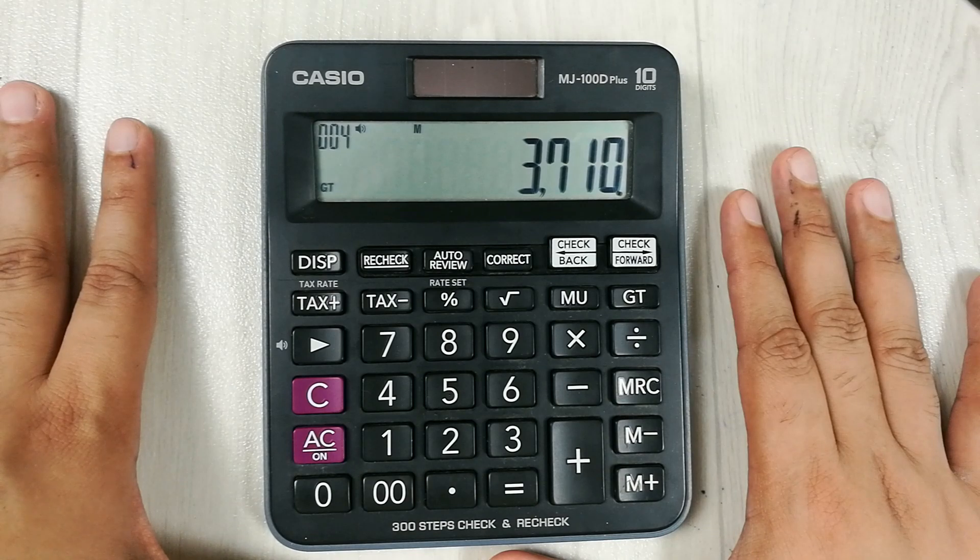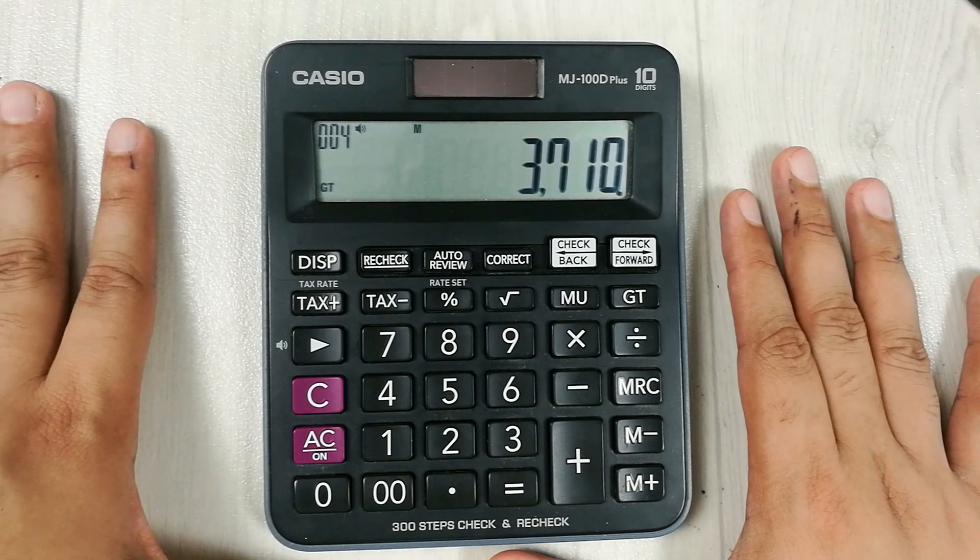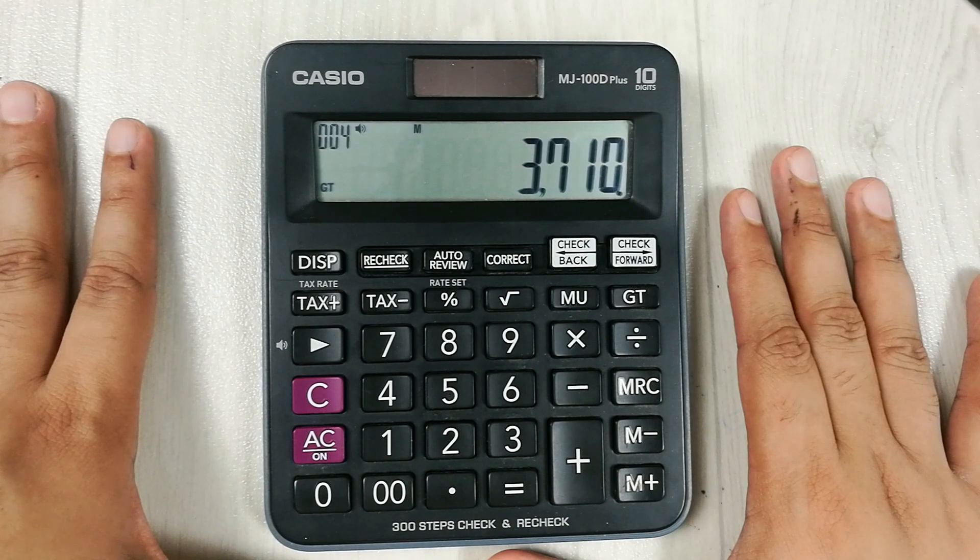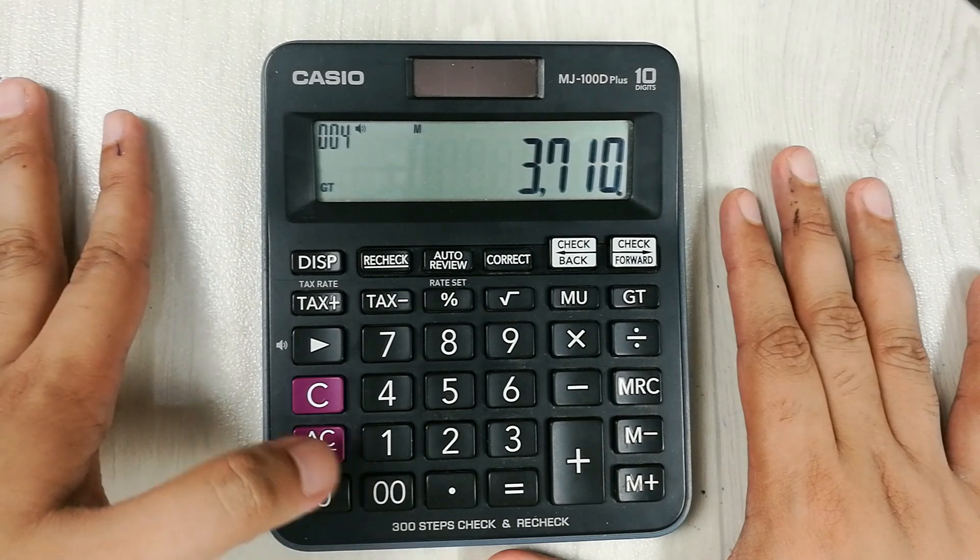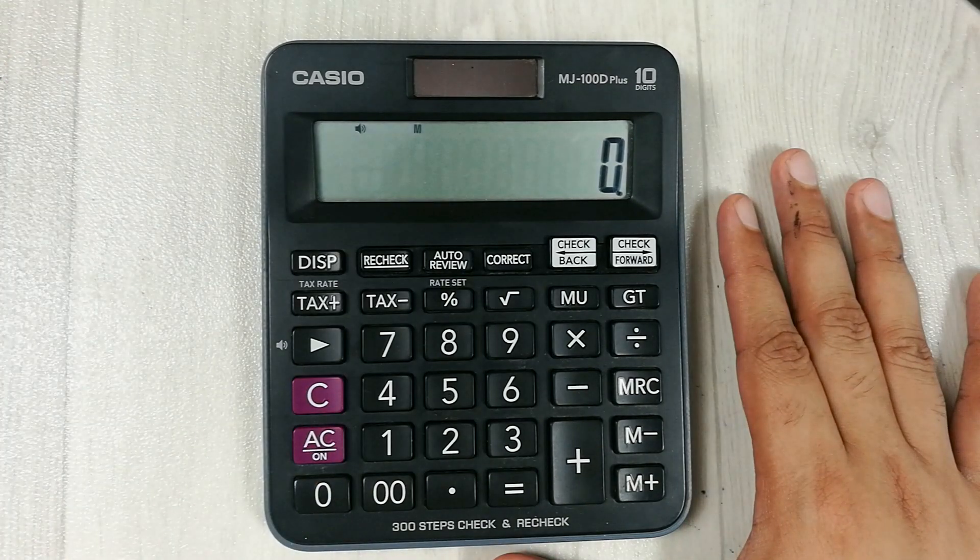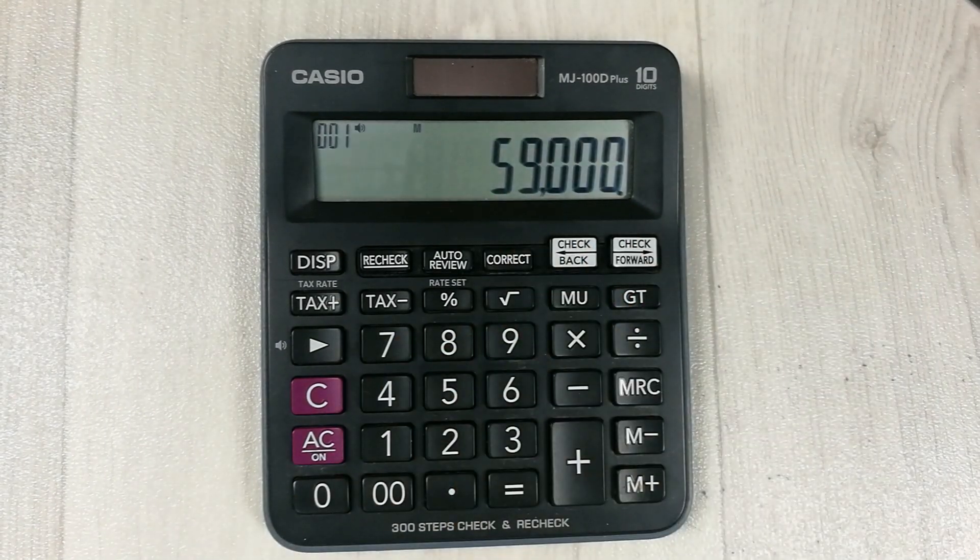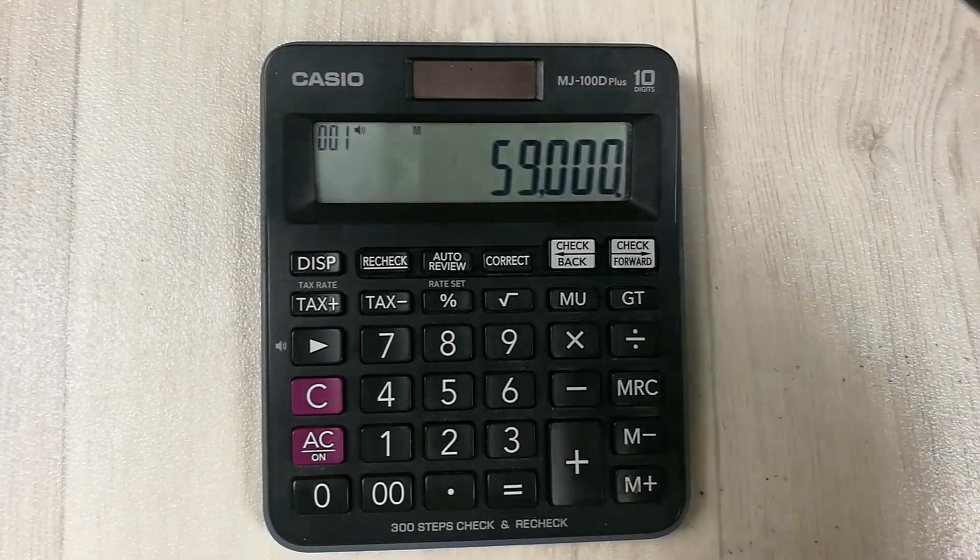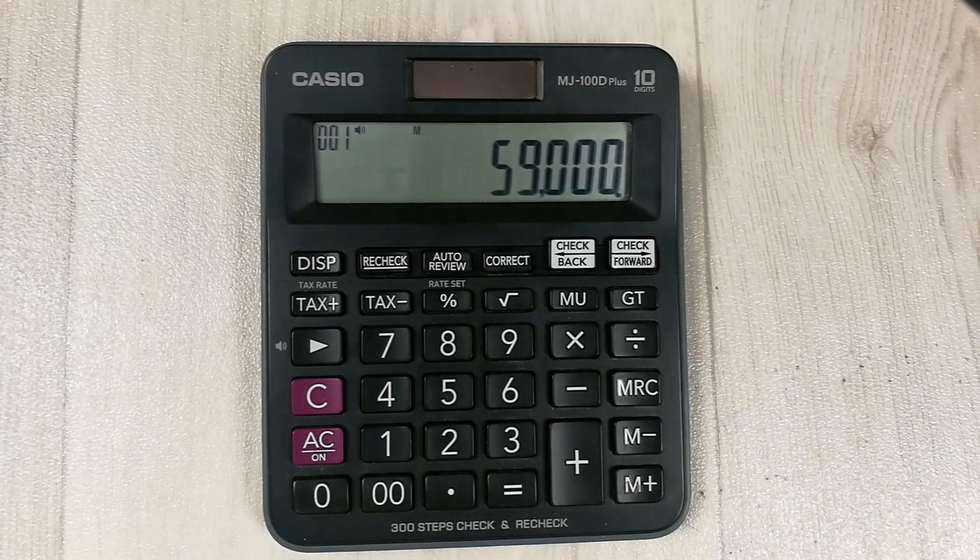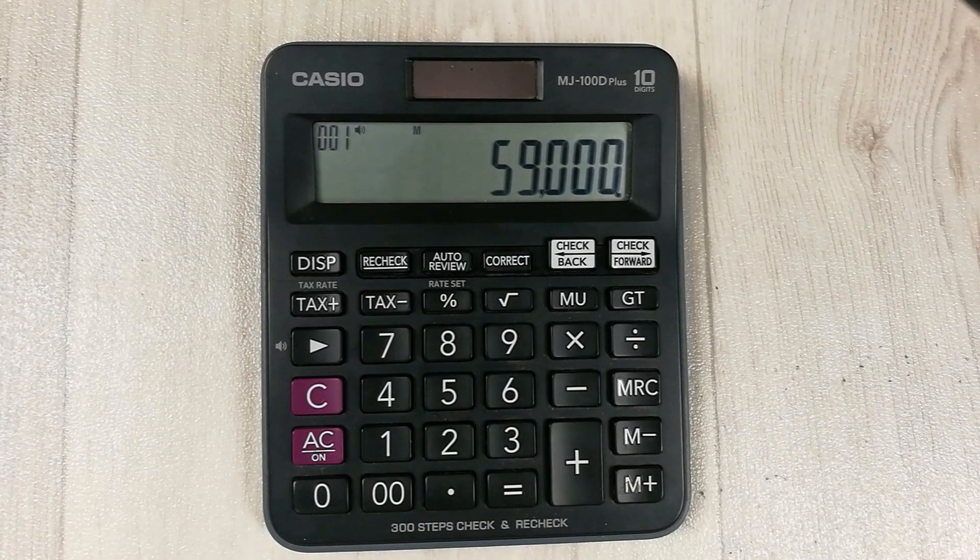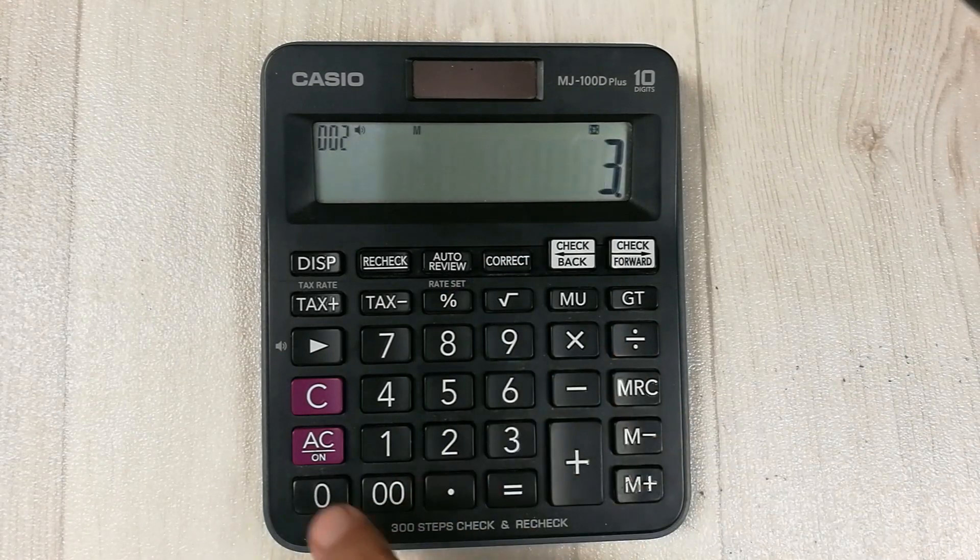Let's move to another example. Let's say the price of an item is 59,000, and you want to find out the 30% off this price. So we multiply it with 30, then we press this percentage button, and then we press this minus button.